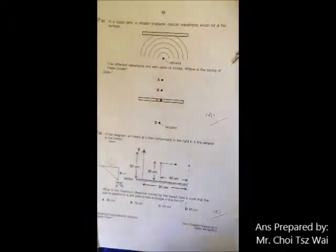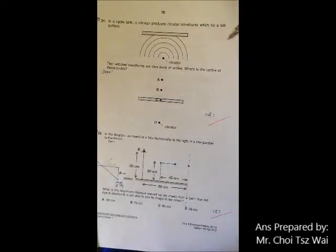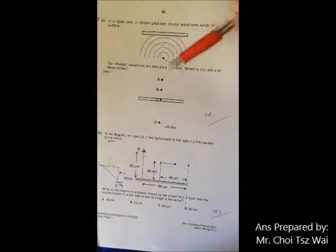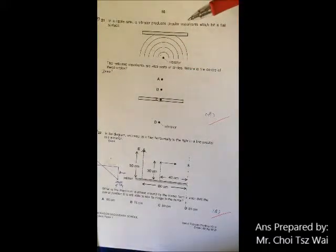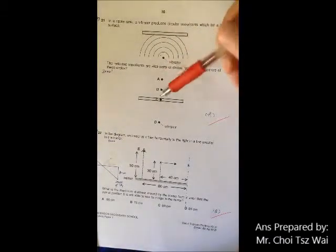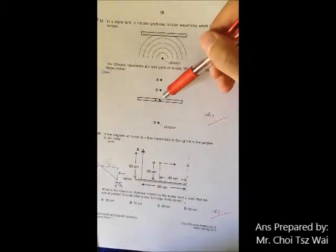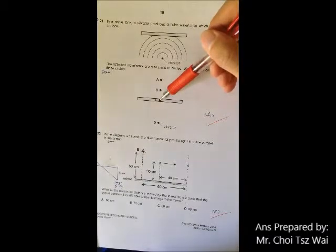For question 21, it is quite common for students to think that the center of the reflected wavefront is from C. But C is actually just the boundary for reflection.